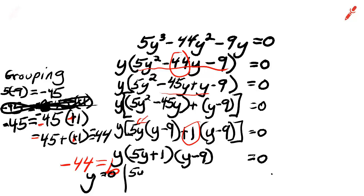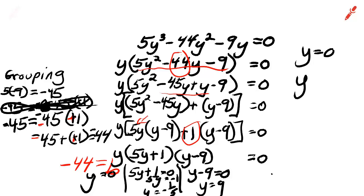Set each factor equal to 0. And solve the resulting equation. Over here in the middle, 5y equals negative 1. So y equals negative 1 fifth. And on the right, y is going to equal 9. So our three answers are y equals 0, y equals negative 1 fifth, and y equals 9.